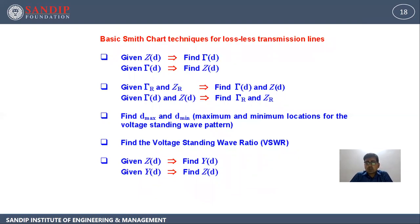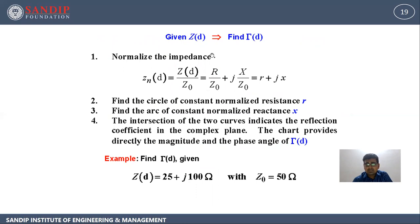Basic Smith chart techniques for lossless transmission line. The things we are going to do include: given Z_T, find the reflection coefficient; or given the reflection coefficient, find the impedance. Similarly, we have to find d_max and d_min, find the voltage standing wave ratio VSWR, or given the impedance find the admittance or vice versa.